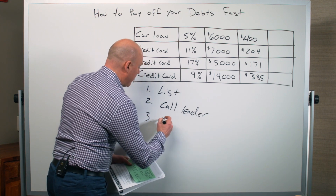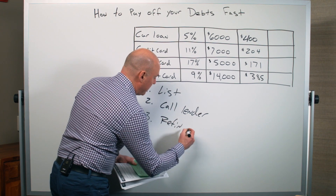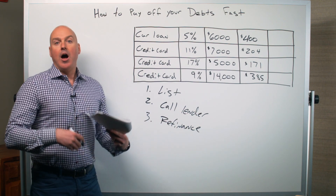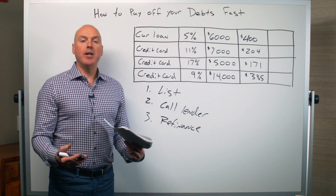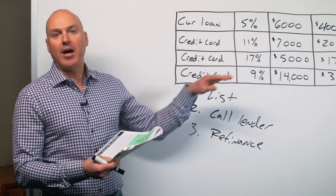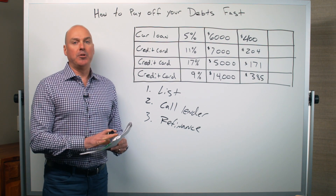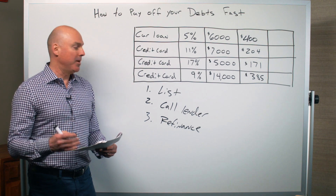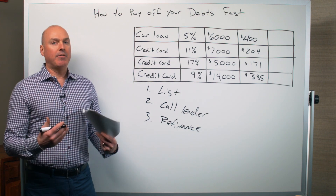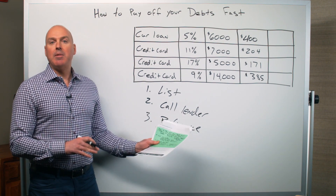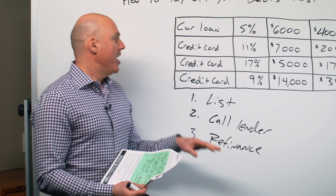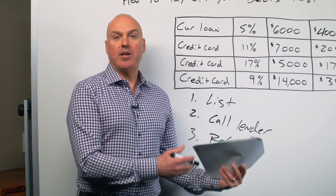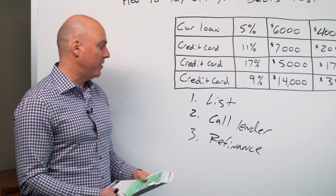Step three is what I call refinancing, and there are a couple of different ways to do this. When you're calling your lenders in step two, you can also ask about special offers — sometimes they have 0% interest balance transfers, which can really help accelerate how fast you're paying that money down. Keep in mind though that balance transfers sometimes have a fee. Even though it might be 0% interest for 12 or 18 months, they might charge a 4% transaction fee. But even with that fee, if you can transfer a 17% credit card balance over to a 0% card, it can be very advantageous.